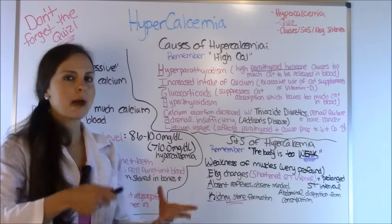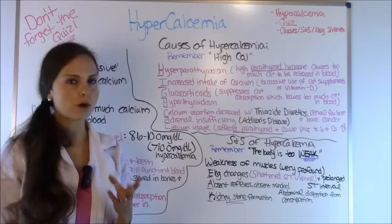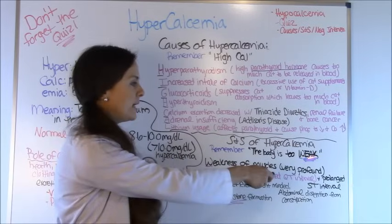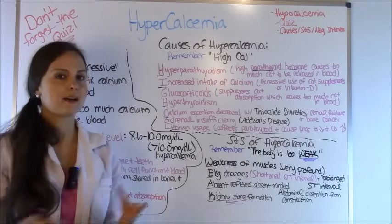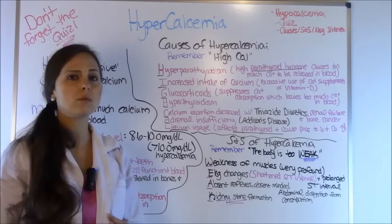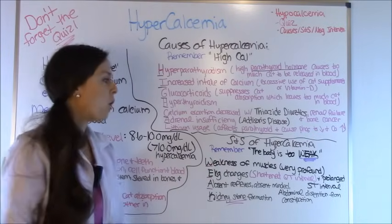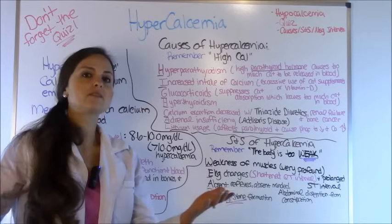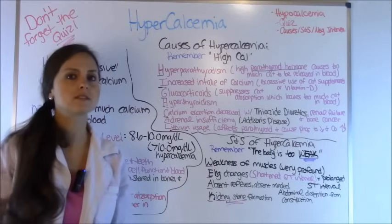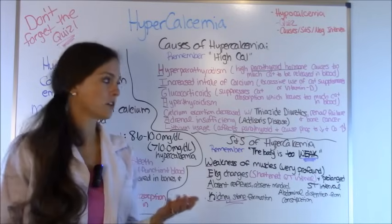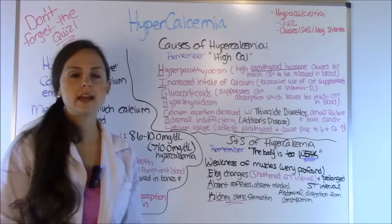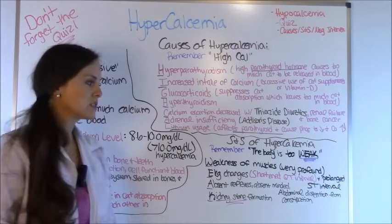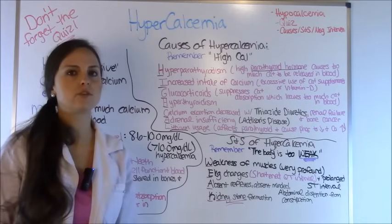How do these patients present with hypercalcemia? Remember the phrase: the body is too WEAK — weak being the key word, because high calcium is going to make them feel horrible. W is for weakness of the muscles — very profound, they'll be very lethargic, tired, and it will be really hard for them to move their muscles, because calcium plays a role in muscle function. E — you're going to see EKG changes, especially if calcium is significantly high. The biggest finding is a shortened QT interval. Commit this to memory — it's an important test question.